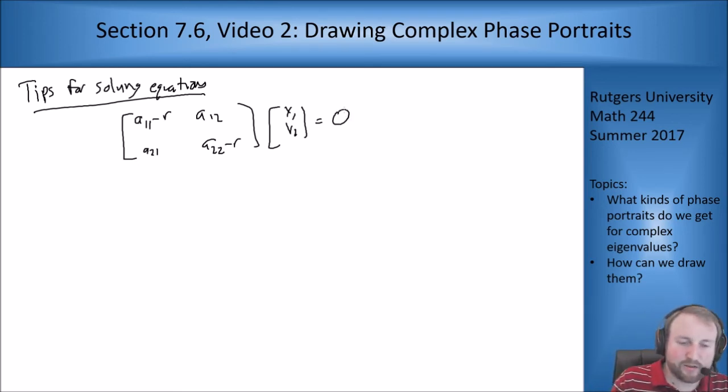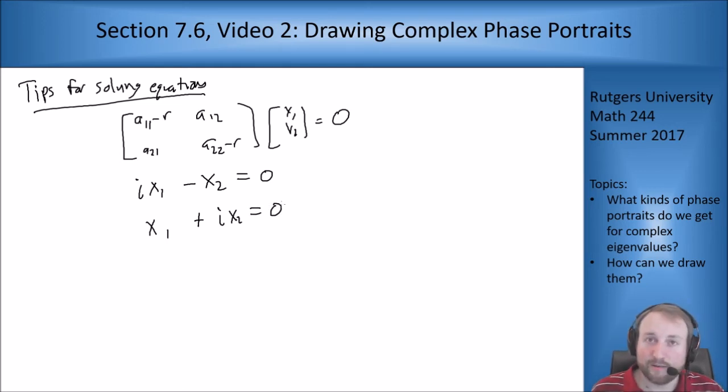So for instance, if I do that and I get to an equation that looks like this. Say I have i x1 minus x2 equals 0 and then I have x1 plus i x2 equals 0. These two are still the same equation.